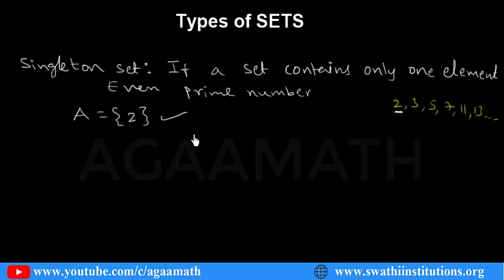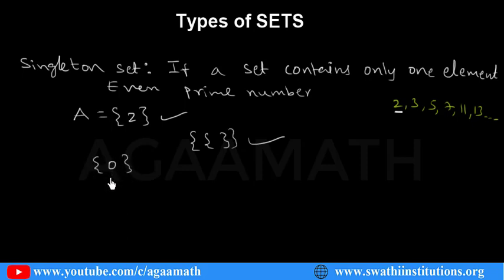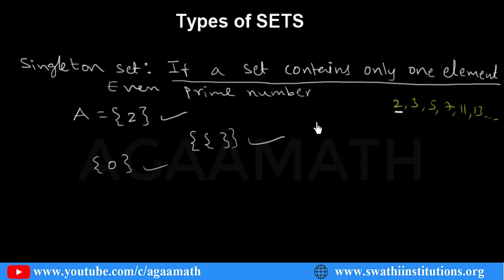Another example: the set of the least whole number. The least whole number is 0. So that set also contains only one element and is a singleton set. A singleton set means if a set contains only one element, it is said to be a singleton set.